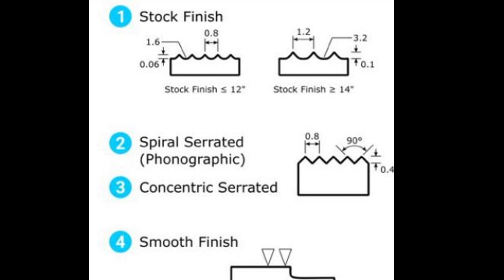Here are some standard finish types required and determined by ASME. The first is stock finish — the most widely used of any flange surface finish. The second is spiral serrated (phonographic finish). The third is concentric serrated finish. The fourth is smooth finish. Let us go through each type to get an idea.